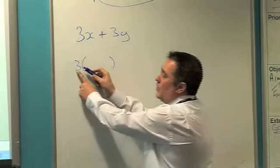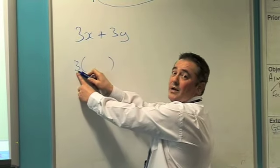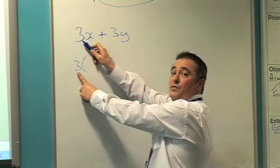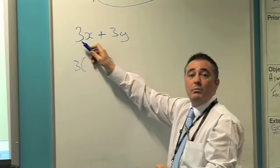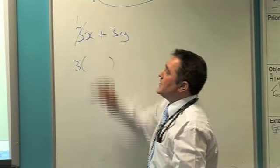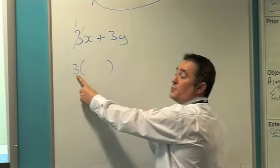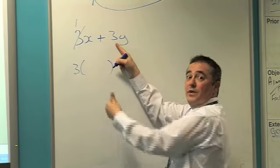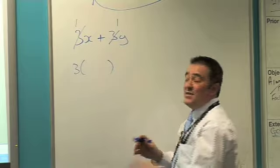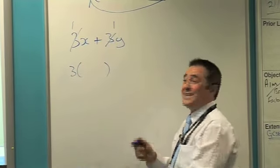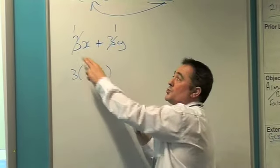Simple thing to do now. What do I have to multiply 3 by to get myself 3? The answer's 1. Cross it out and stick a 1 above it. What do I have to multiply 3 by to get me 3 on that side? The answer's 1. Very simply, just write inside the bracket what's not crossed out.